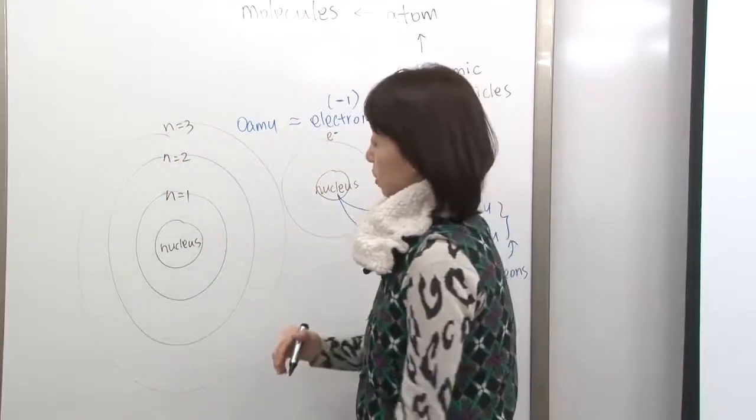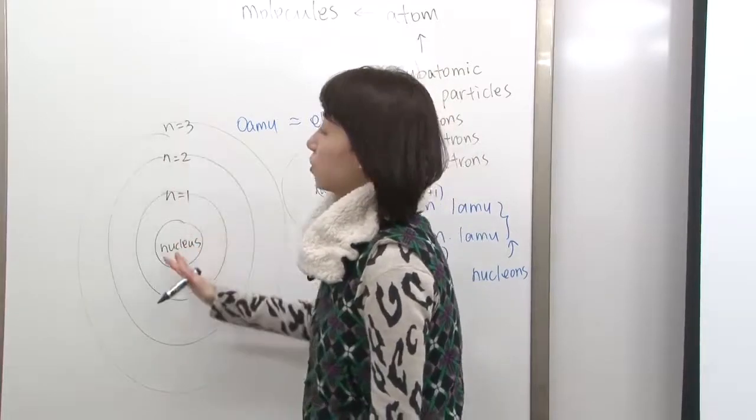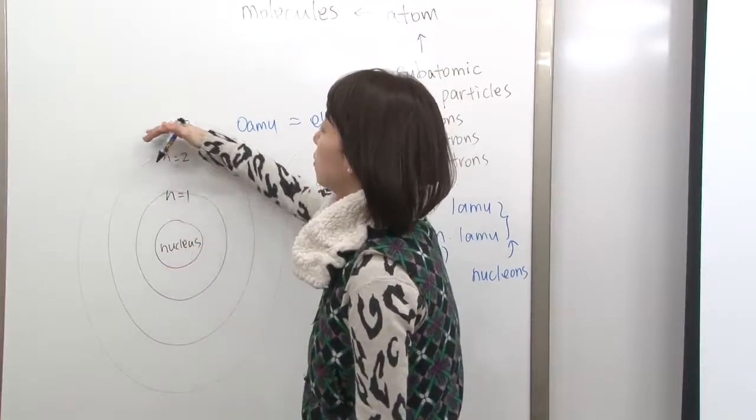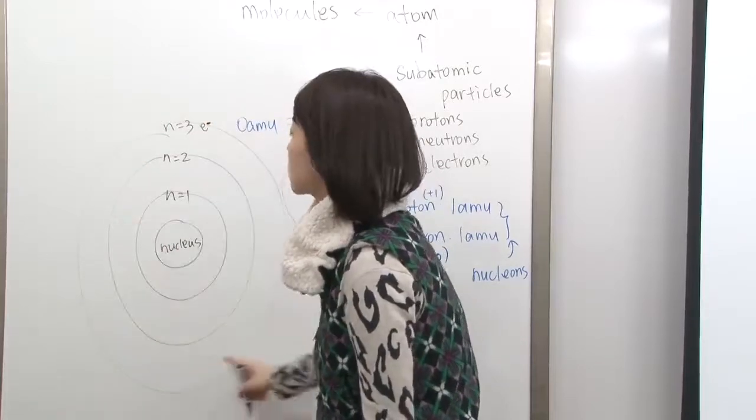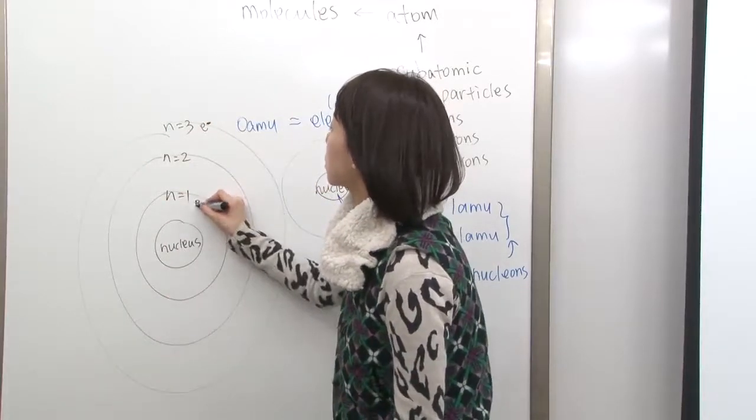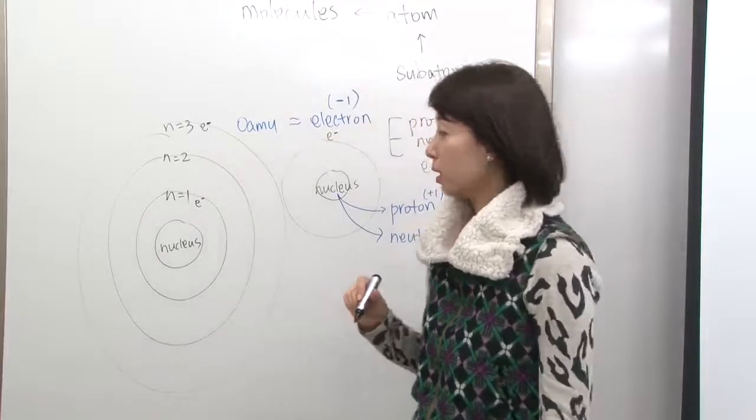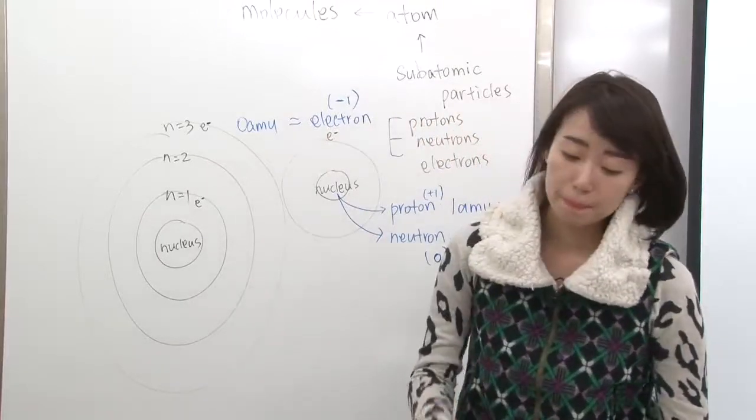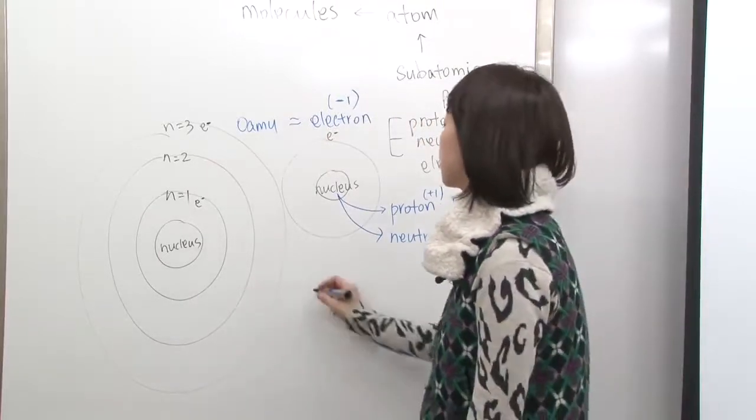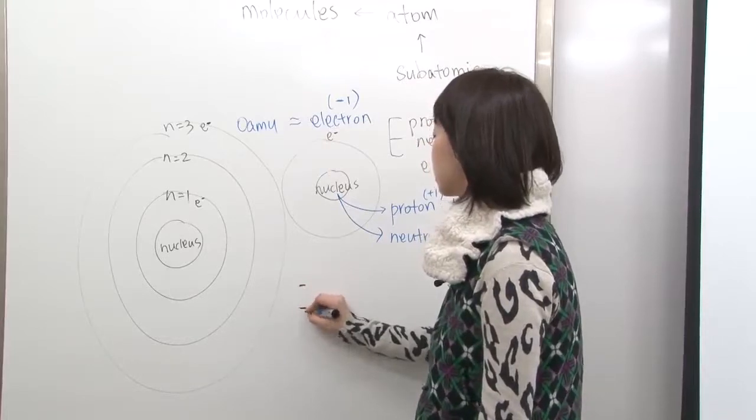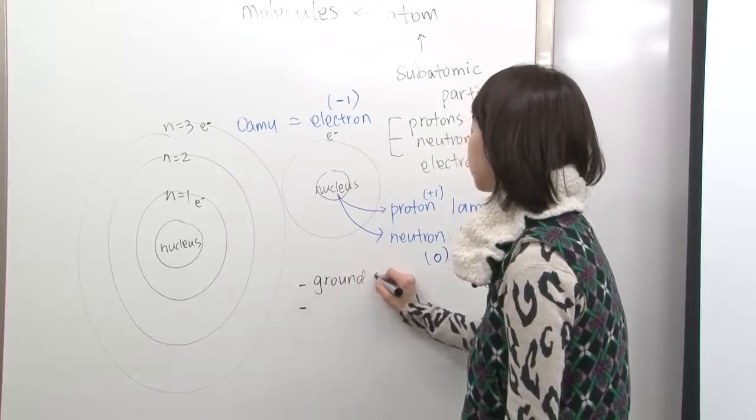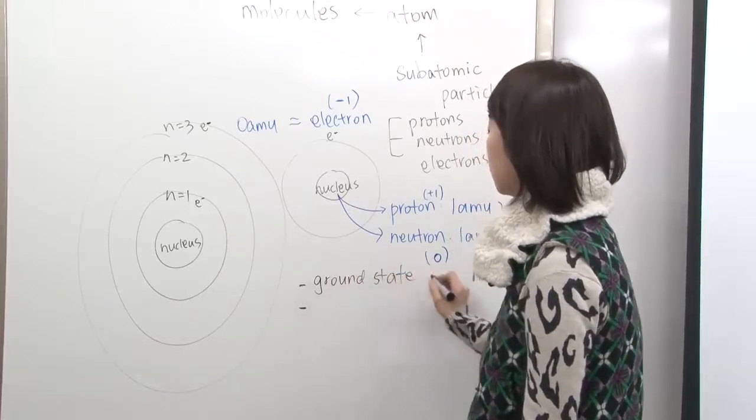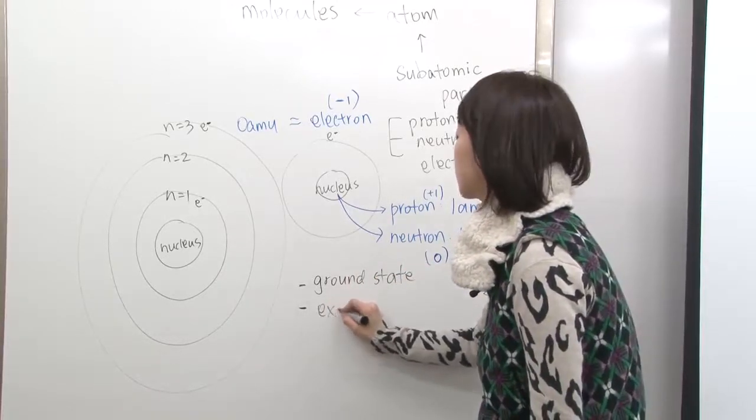These kind of orbits are called energy levels. As you go farther away from the nucleus, then your energy level actually goes up. Electrons in this orbit actually have higher energy than electrons in this orbit. So then on page 37, they talk about two terms.